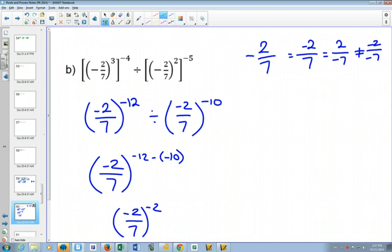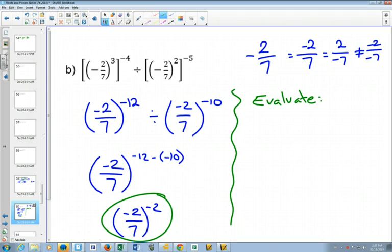I could give you this exact same question and change the instruction to evaluate. It would just be that this is done if it says write as a single power. But this is not done if it says evaluate. It would be 49 over 4. What did you do as your first step? You just put the... I multiplied it.